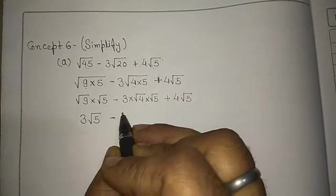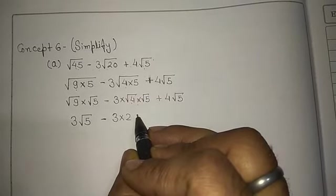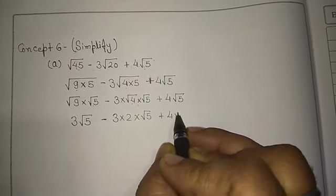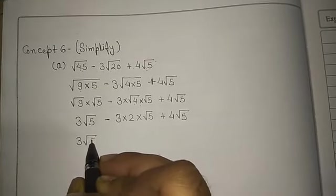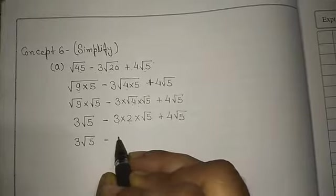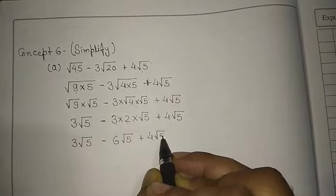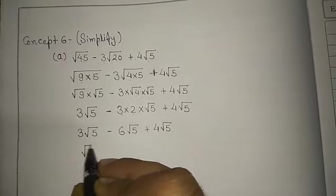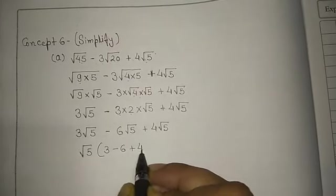This is 3 under root 5 minus 3 into 2 under root 5 plus 4 under root 5. So this becomes 3 root 5 minus 6 root 5 plus 4 under root 5 is here. Now if we take under root 5 common, we have 3 minus 6 plus 4.